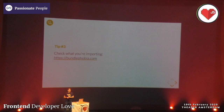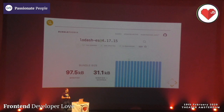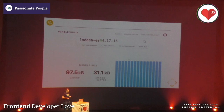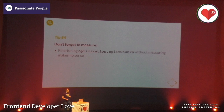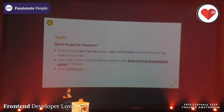Tip three: check what you're importing. There's a nice website called bundlephobia.com - I always use it. Before using a module, I enter it - for instance lodash - and it shows you whether it's tree-shakable, if it's side-effect-free (meaning it's more optimizable and you'll only use the code that's actually necessary). Tip four: don't forget to measure. If you're fine-tuning optimization splitChunks a lot without measuring, it makes no sense. You should use user-centric performance metrics like time to first meaningful paint, and of course you should use Lighthouse, which will tell you if your performance is bad.